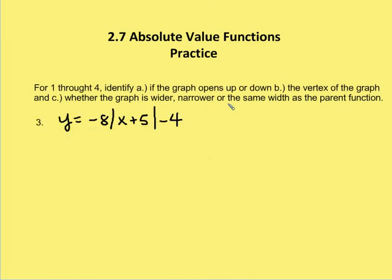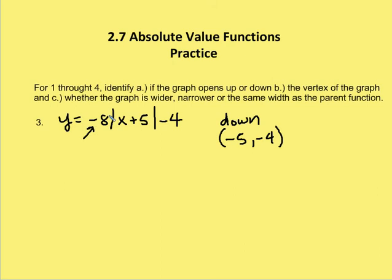Third question, same process. Does the graph open up or down? There's a negative coefficient, so the graph is going to open down. The vertex: the H value is going to be negative 5 and the K value is negative 4, so there's my vertex (−5, −4). Is the graph wider, narrower, or the same width as the parent function? The absolute value of 8 is 8, which is greater than 1, so the graph is going to be narrower.